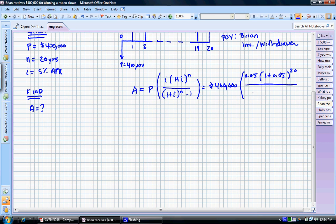divided by (1 + 0.05) to the 20 years minus 1. And if we solve for A, A is going to be equal to $32,097.